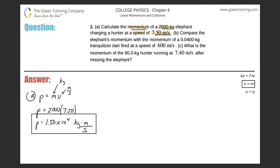Let's look at letter B. Compare the elephant's momentum with the momentum of a 0.04 kilogram tranquilizer dart fired at a speed of 600 meters per second. All right, so why don't we first find the momentum of that dart.